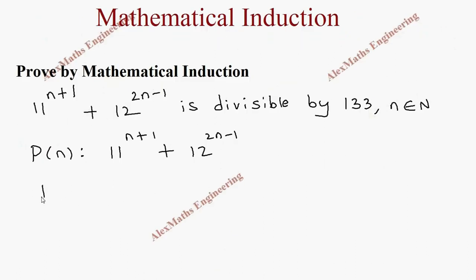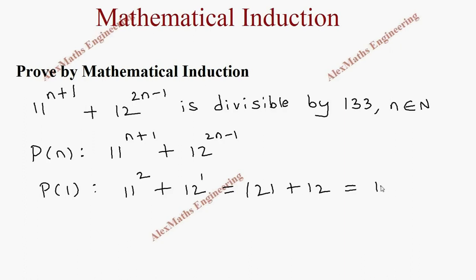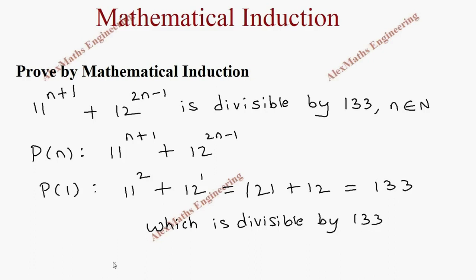We take P(1): so P(1) is 11^(1+1) + 12^(2×1-1), which is 11^2 + 12^1. That gives 121 + 12 = 133, which is divisible by 133. Therefore P(1) is true.